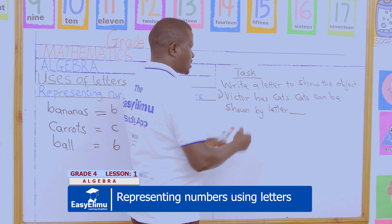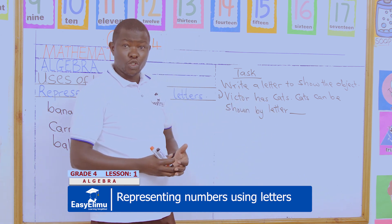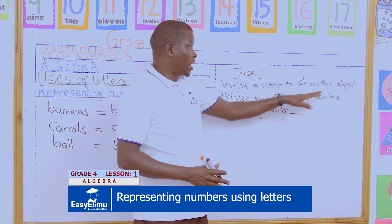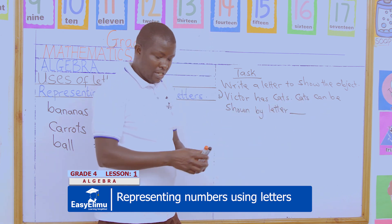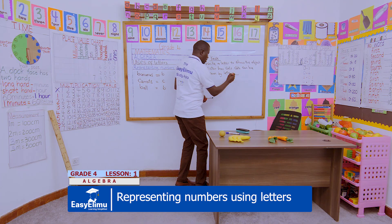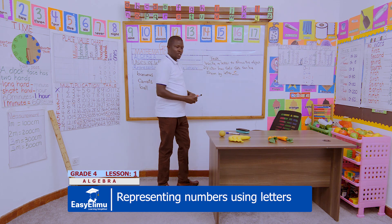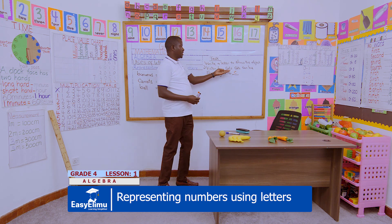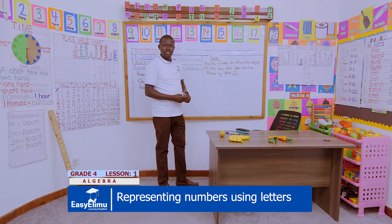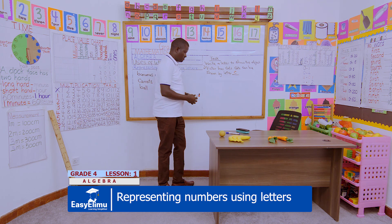Victor has cats. Remember, we are using letters to represent objects or items. So we say cats can be shown by a letter — for example, let us choose C for cats. C has represented the number of cats that Victor has. That is number one. Can you do the others?